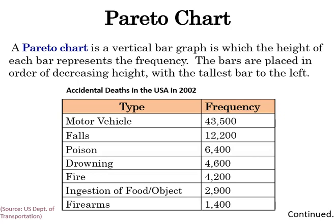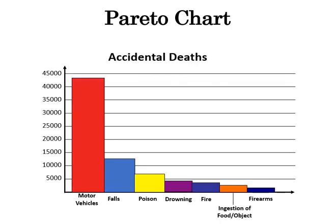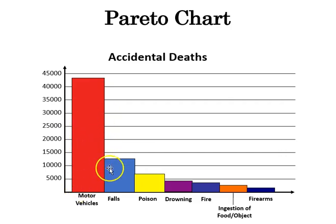Next, we can look at the Pareto chart, which is a type of bar graph where each bar represents a frequency and the bars are ordered in decreasing order. Here's that same accidental deaths data in a Pareto chart, with motor vehicles again showing the highest category, followed by falls, poisoning, and so on. This time, however, we're looking at the raw frequency number, not the proportion or relative frequency.